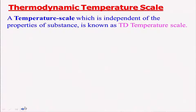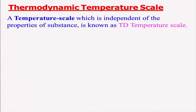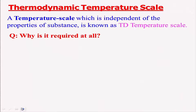The thermodynamic temperature scale is not dependent on the properties of the substance, unlike what we use in a mercury-and-glass thermometer. In such a thermometer, the temperature measured depends on the expansion of mercury; if we use alcohol instead, the expansion will be different. So the measurement is dependent on the thermometric fluid, and we need to devise a temperature scale which is independent of the properties of that substance.